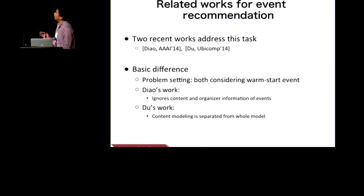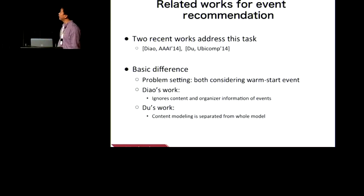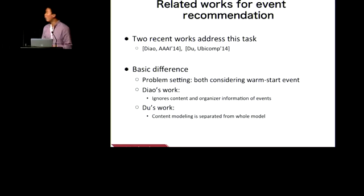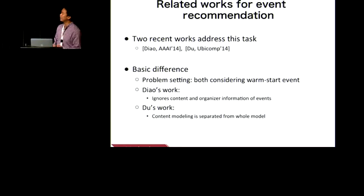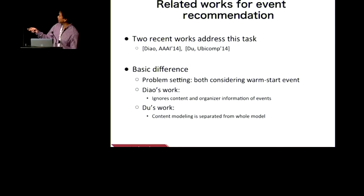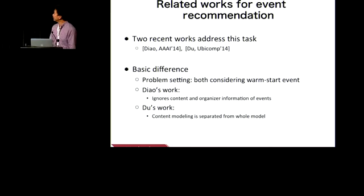The event recommendation task is a relatively new task. Two papers published in 2014 address this task. But their problem setting is different from ours because they assume that all events are non-cold-start, so they can learn the representation of events from training data directly. While in our task, we can't learn the event representation directly. Besides, some of these works ignore content and organizer information of events, while other works didn't integrate content modeling in the whole model.